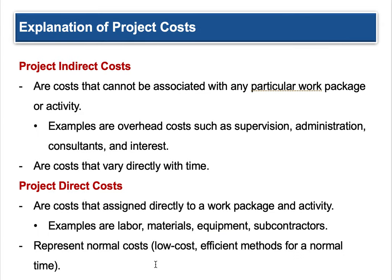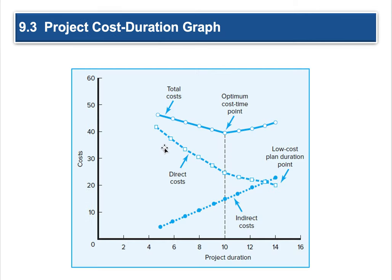Project direct costs are costs assigned directly to a work package and activity. Examples are labor, materials, equipment, and subcontractors. This represents normal costs — low-cost, efficient methods for a normal period of time. So if they're efficient costs, look what they do over time: they start to go down. You get more efficient as you do this project. Early on you don't understand the project, so you put a lot of time in. But as you do it more, you figure it out and get more productive, and your costs go down.